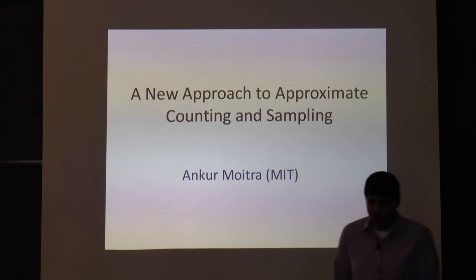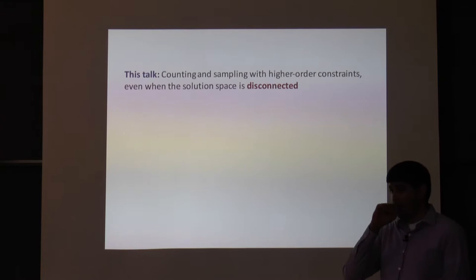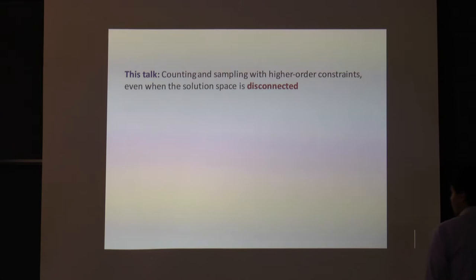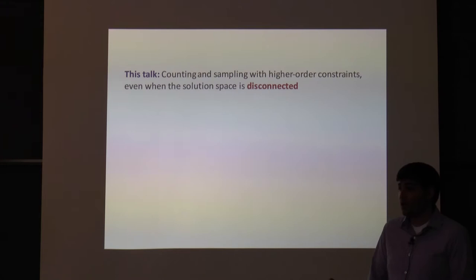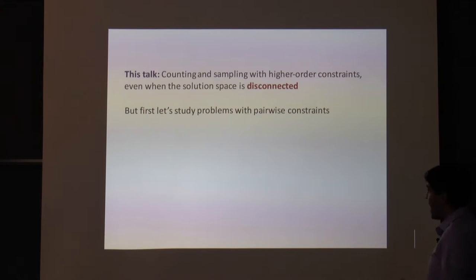I'm going to give you a new approach for approximate counting and sampling. What's exciting about this approach is that it's going to work for problems with higher order constraints, and it's going to work even in situations where the things you're counting or want to sample from aren't even connected in the natural way — so how exactly do you run things like Markov chains to find the set of satisfying solutions?